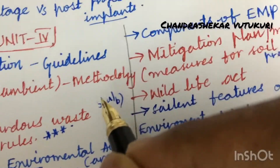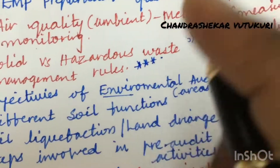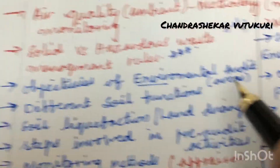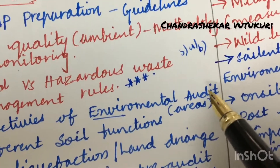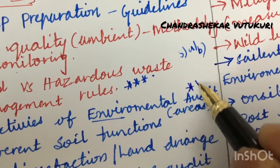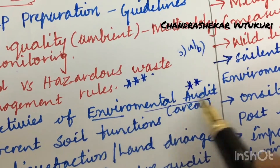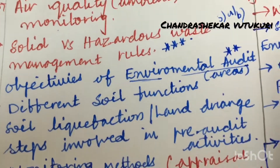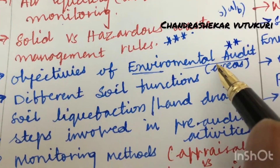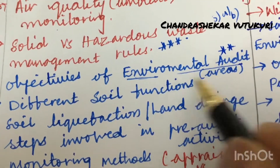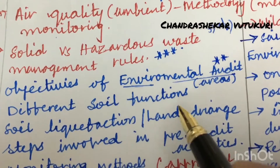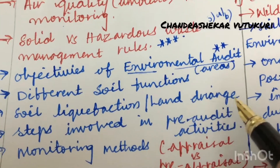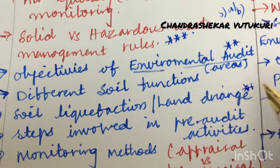For 6A and 6B, the objectives of environmental audit and the environmental areas related to environmental audit — do not skip this. You are going to get one question related to environmental audit for sure. The different soil functions, soil liquefaction, land drainage — explain these terms — are also included.